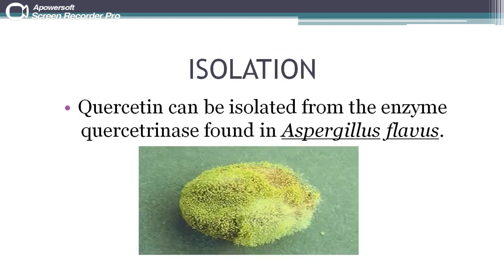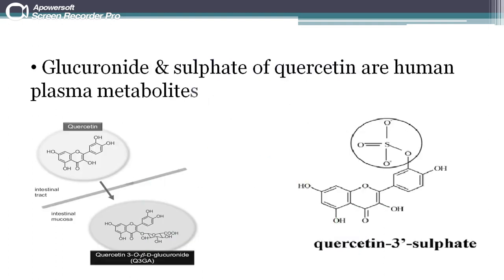Since quercetin is a natural compound, it is isolated from natural sources. It can be obtained from quercetinase, which is an enzyme in Aspergillus flavus. Quercetin-3-O-beta-D-glucuronide is found in intestinal mucosa, and quercetin-3-sulfate is a human plasma metabolite. Both of these are naturally occurring compounds.